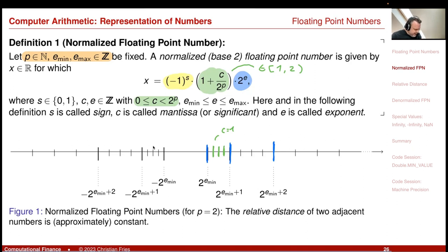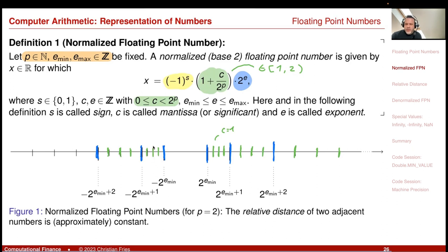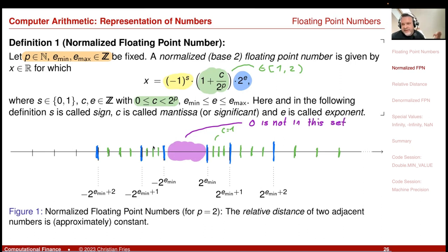The same pattern appears on the negative side, encoded by the sign bit. The exponent E encodes the scale, and C encodes the equi-partitioning within each interval. Notably, there is no way to represent zero in this set — the interval around zero is missing, so zero is not in the normalized floating-point set.